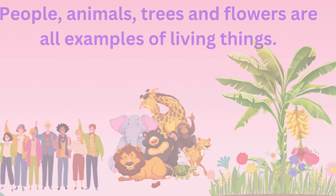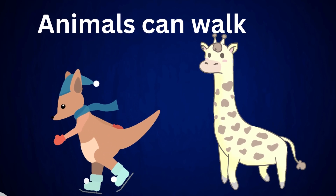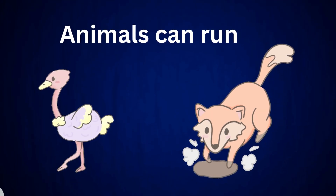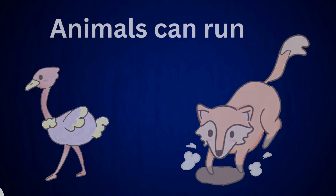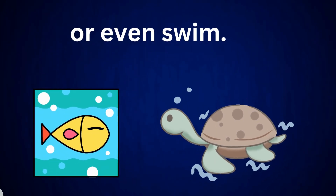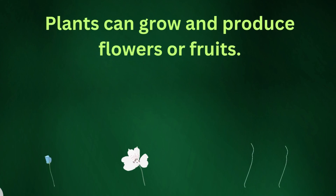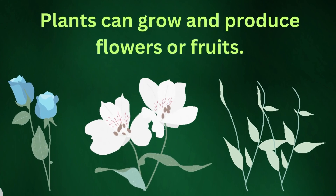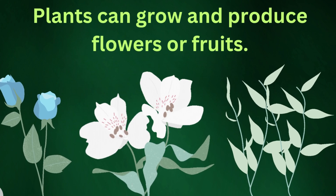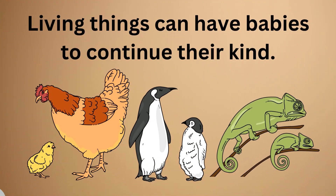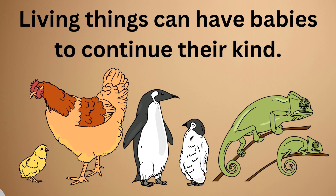Animals can walk, run, or even swim. Plants can grow and produce flowers or fruits. Living things can have babies to continue their kind.